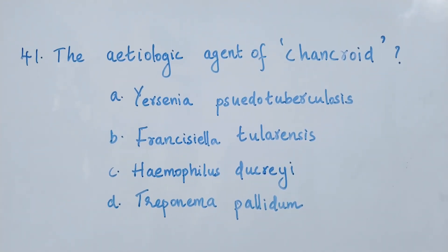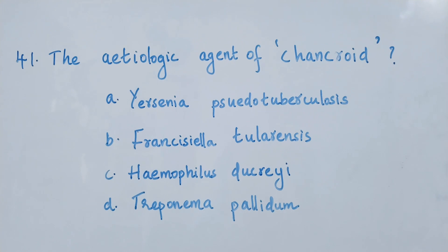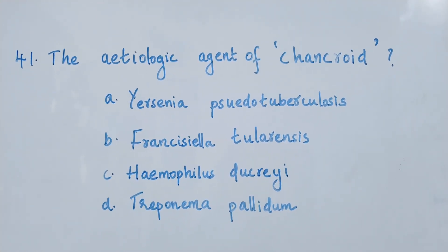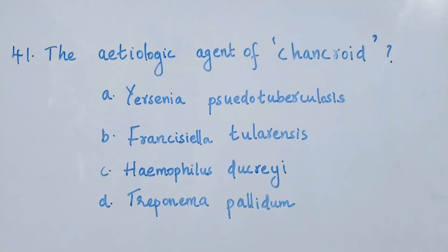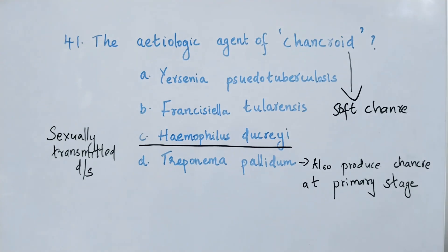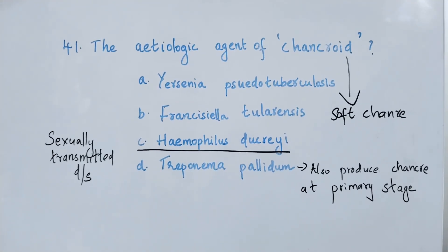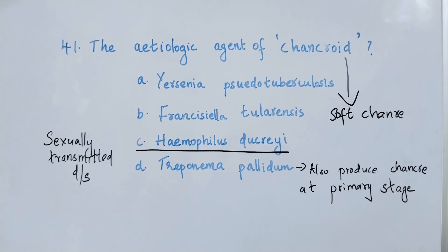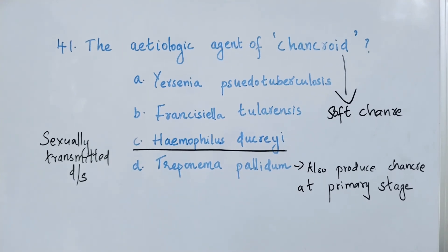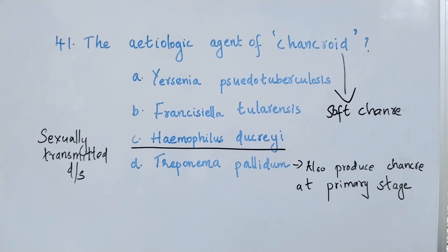Question number 41. The etiologic agent of cancroids. Option A: Yersinia pseudotuberculosis. Option B: Francisella tularensis. Option C: Haemophilus ducreyi. Option D: Treponema pallidum. The right answer is option C, Haemophilus ducreyi. Cancroids is also known as soft chancre and it is a sexually transmitted disease. Treponema pallidum can also cause chancre at the primary stage.